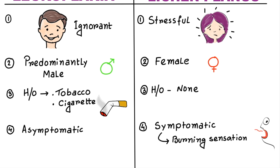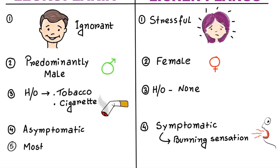The next thing to remember is that Leukoplakia mostly occurs unilaterally, but Lichen Planus is most of the time bilateral.